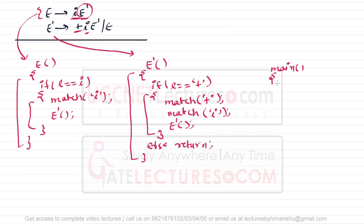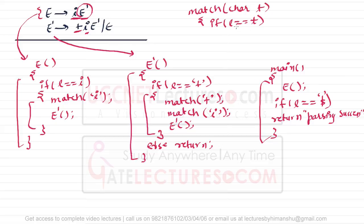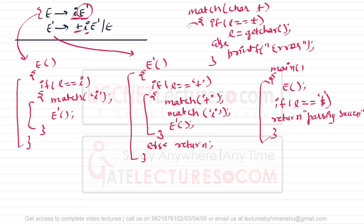We call these two functions from the main function. Since E is the start symbol, we call E from main. If the lookahead symbol equals dollar, then we say parsing is successful. The match function looks like this: match on character t — if the lookahead symbol equals t, then we get the next character; else we print an error.